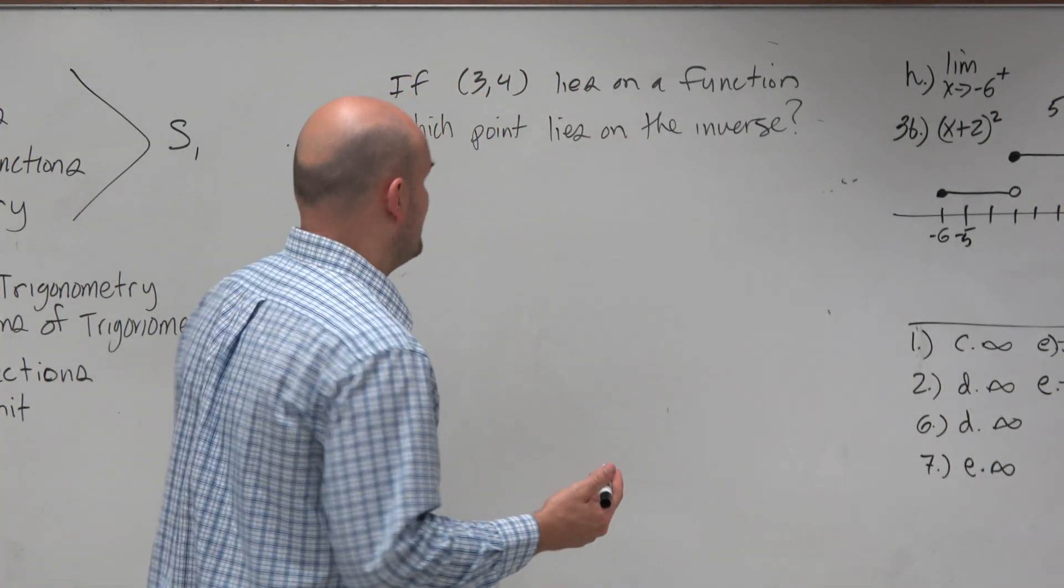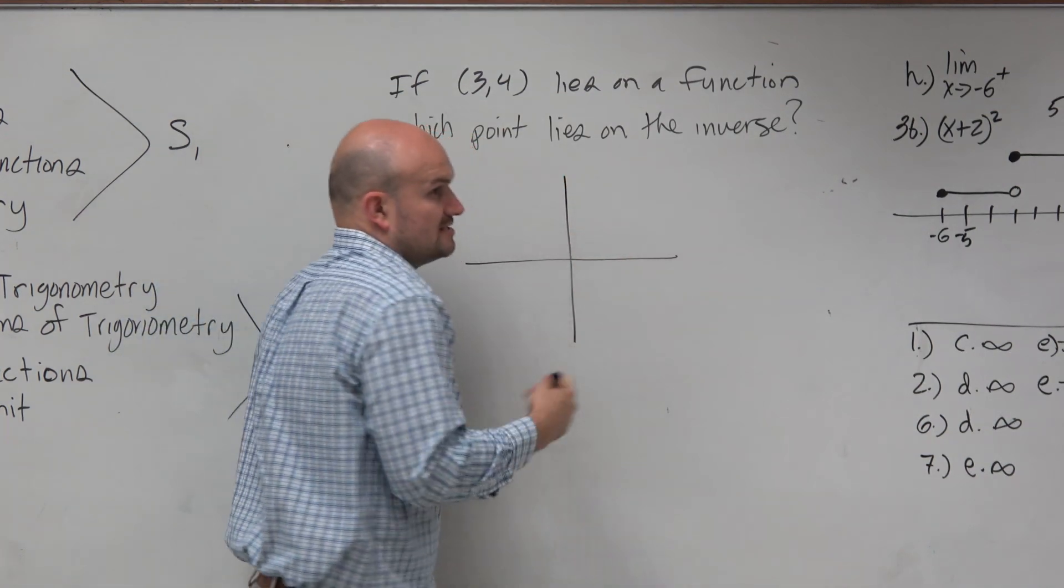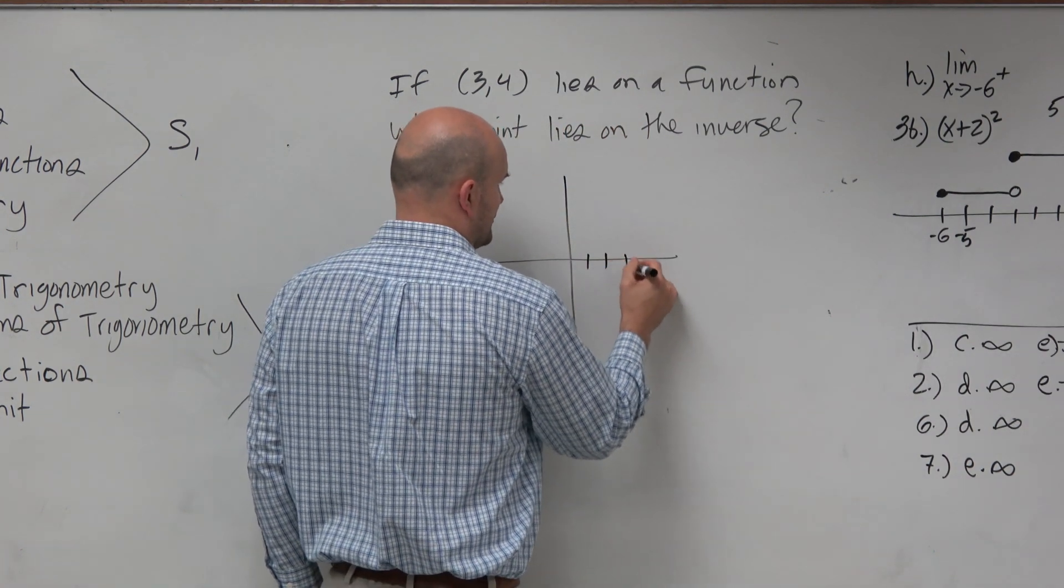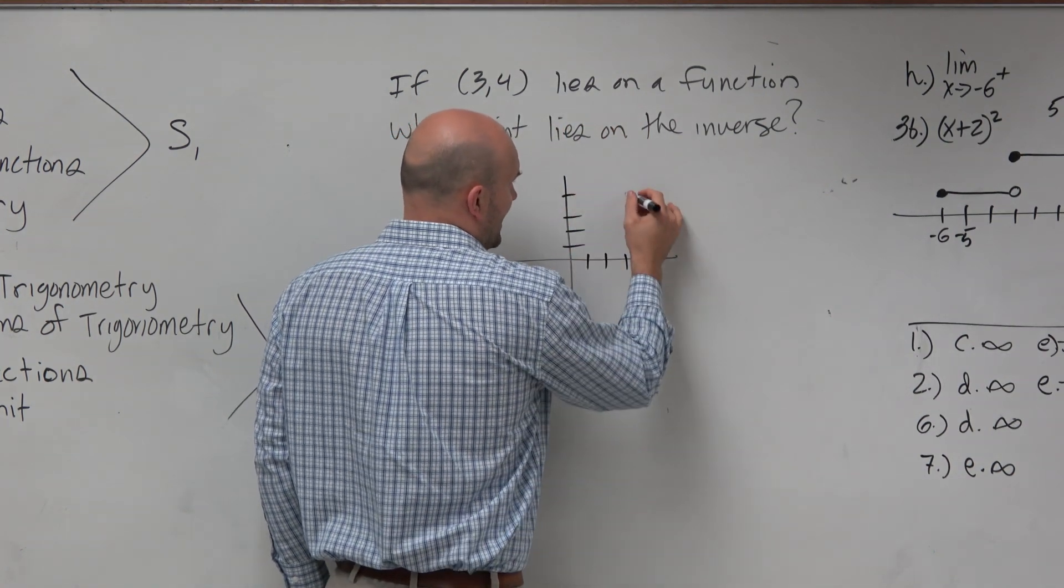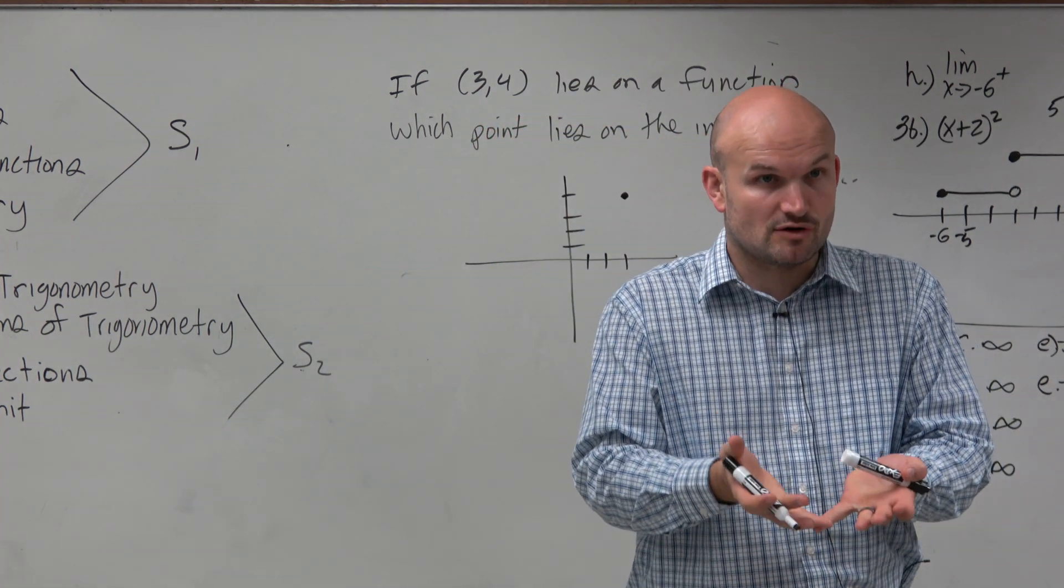So a couple things we need to remember. First of all, we have a coordinate point. I think one of my stories I've told you guys is if you have a point, why don't we just graph it, just to look at what it looks like. So 1, 2, 3, 1, 2, 3, 4. I do not know what the function looks like, because it doesn't tell us what the function looks like. It just says this point is on this function.